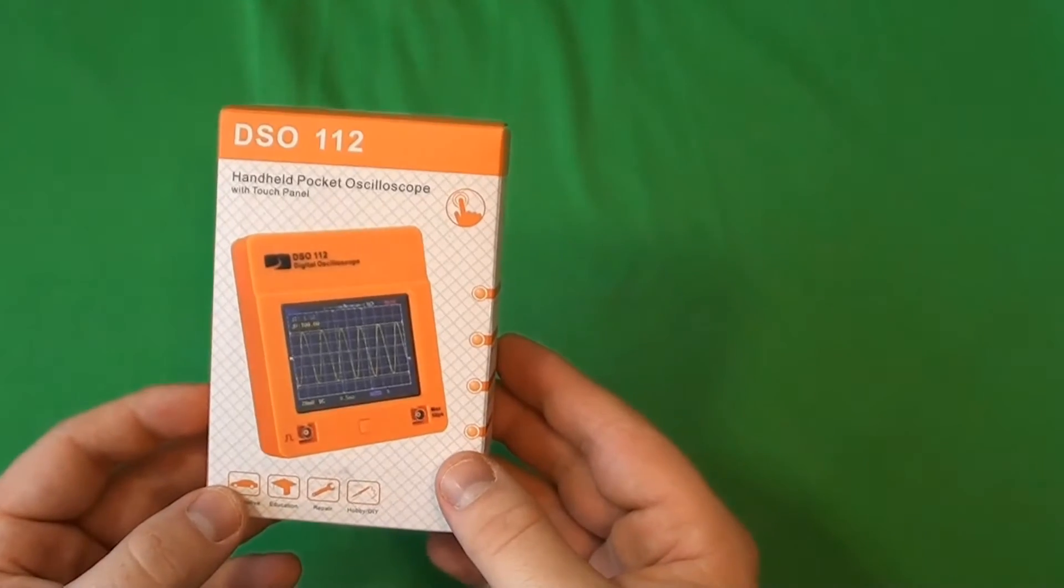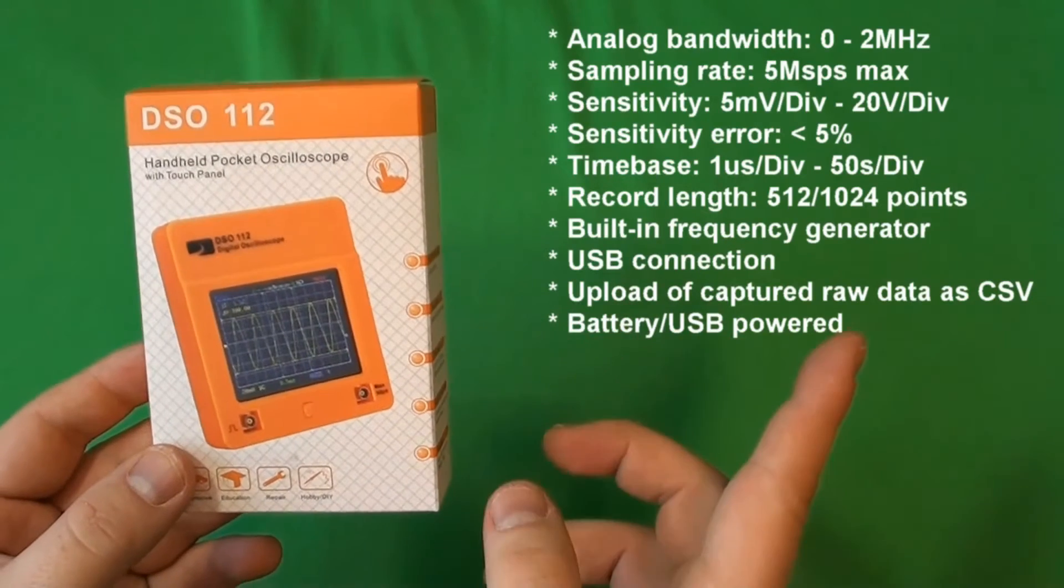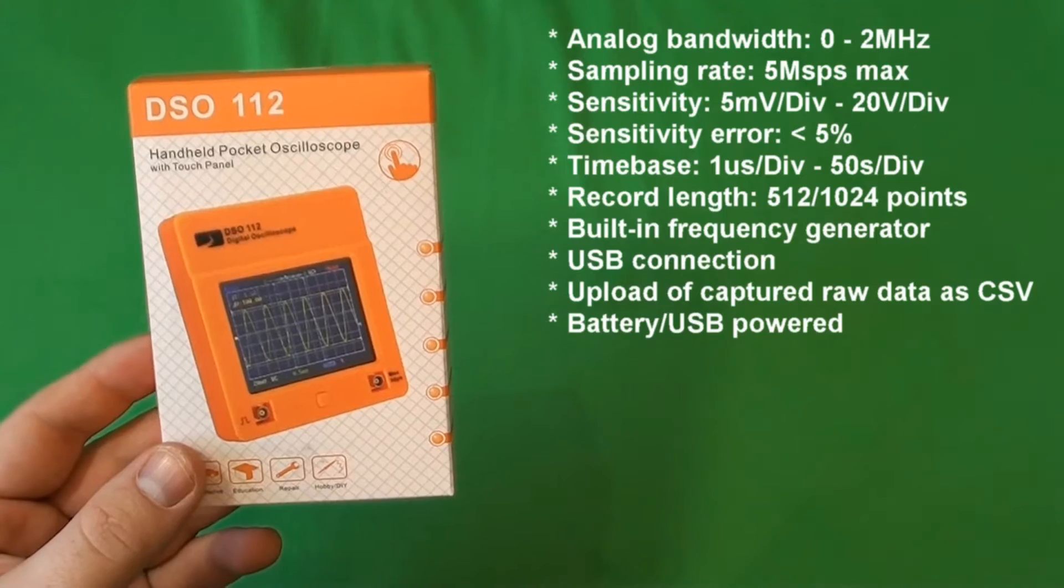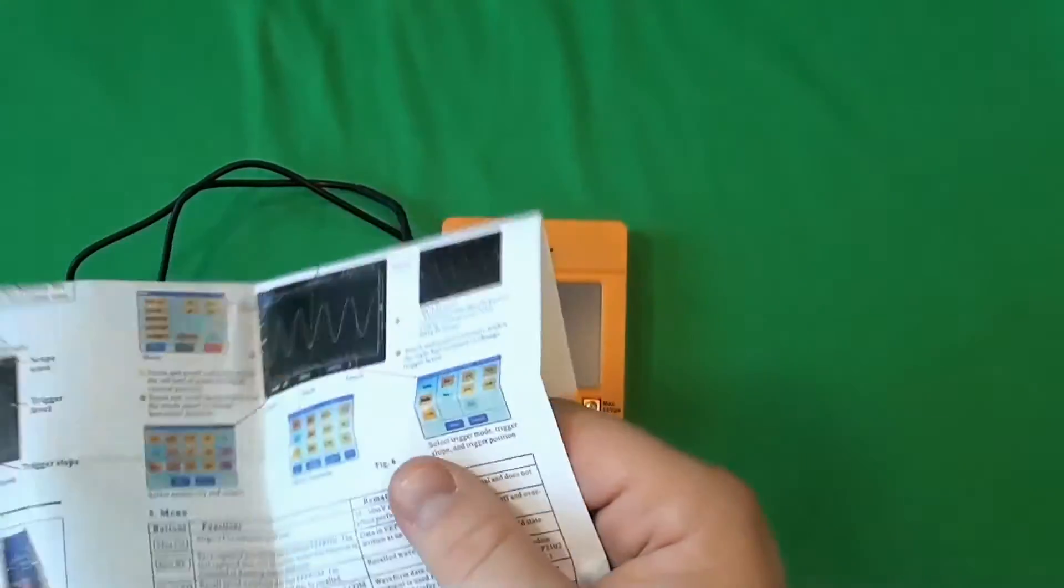Hello guys, today we're going to have a look at this tiny digital oscilloscope. The specs are right here. Let's have a look at what's inside. Inside we'll find the main unit, two probes, and a manual on a single sheet of paper.